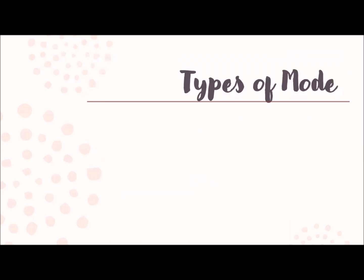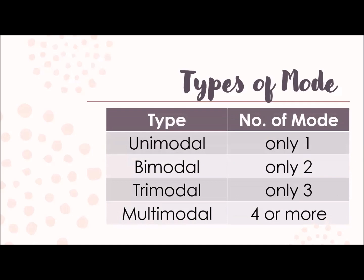Let's start with the types of mode. We have here the unimodal, bimodal, trimodal, and the multimodal. By its prefixes, we have uni, which means we only have one mode. Bimodal, we have bi, two. Tri is three, and then multi means four or more.